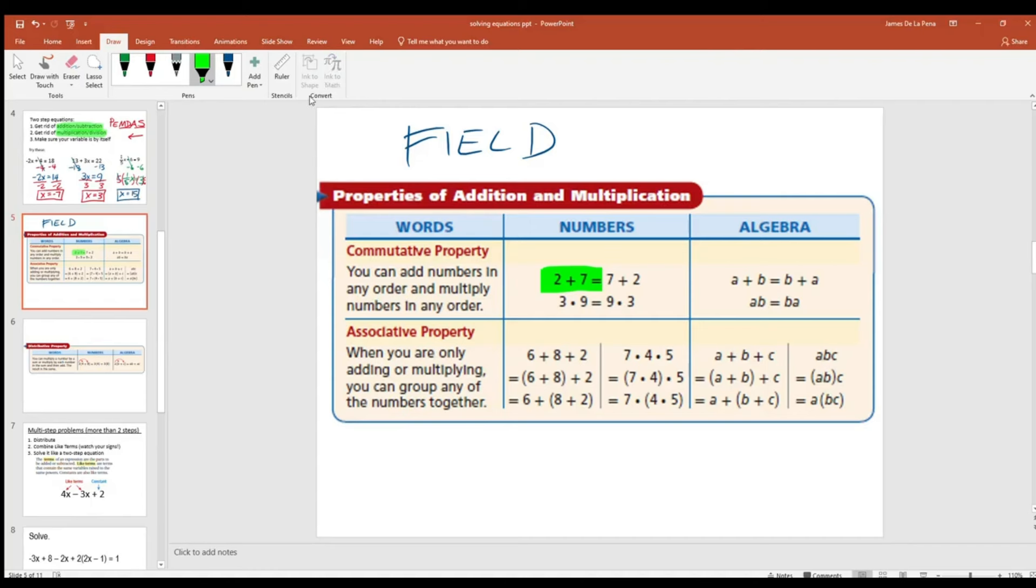The associative property... And the associative property is a little bit different. It's when you have a series of one single operation, like, let's say multiplication. Say like a times b times c. It's the same thing if you multiply a times b, take that result, then multiply it by c. Versus if you were to multiply b times c and then take that result and then multiply it by a.